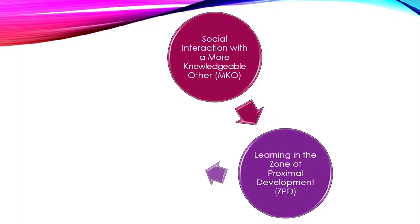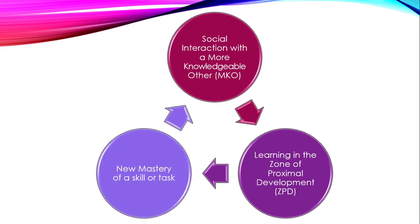Think of it like a revolving growth cycle: social interaction with a more knowledgeable other puts you in that Zone of Proximal Development, doing cooperative learning. Once you gain that knowledge, you reach mastery of a task or skill. Then you move back into social interaction with someone who knows more about something else, back into the ZPD, back into mastery — and so on, to keep growing even well beyond childhood. I think this applies to everybody throughout their life.